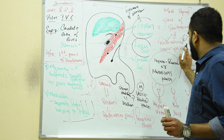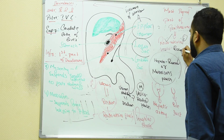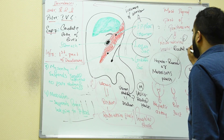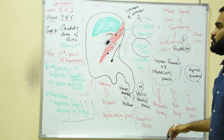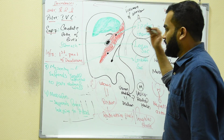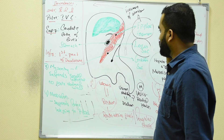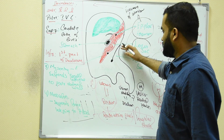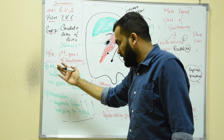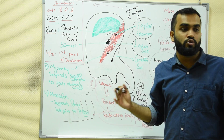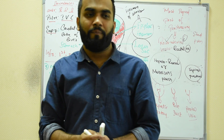So to summarize: in standing position, the most dependent part is the rectouterine pouch (Pouch of Douglas) in females, and the vesico-rectal pouch in males. In supine position, it is the hepatorenal pouch or Morrison's pouch. Remember lesser omentum, greater omentum, what the epiploic foramen is — it is the foramen of Winslow — and their boundaries. These are the important topics from the folds of peritoneum.